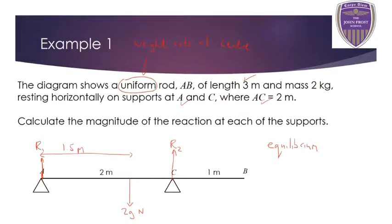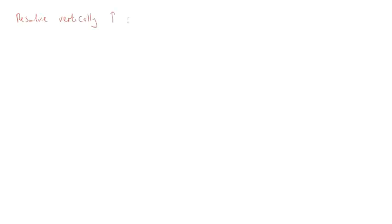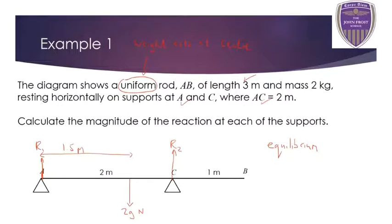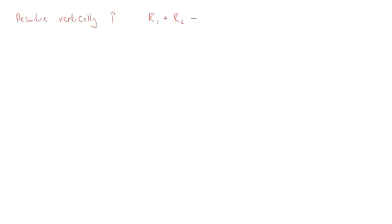If this body is resting on the supports, it's not moving - so the system is in equilibrium, which means there's no resultant force. From Year 12, the first thing I'm going to do is resolve vertically, taking upwards as my positive direction. R1 and R2 are both acting upwards, so R1 plus R2, minus 2g (acting downwards), equals 0. So R1 plus R2 equals 2g. I'll call that Equation 1.